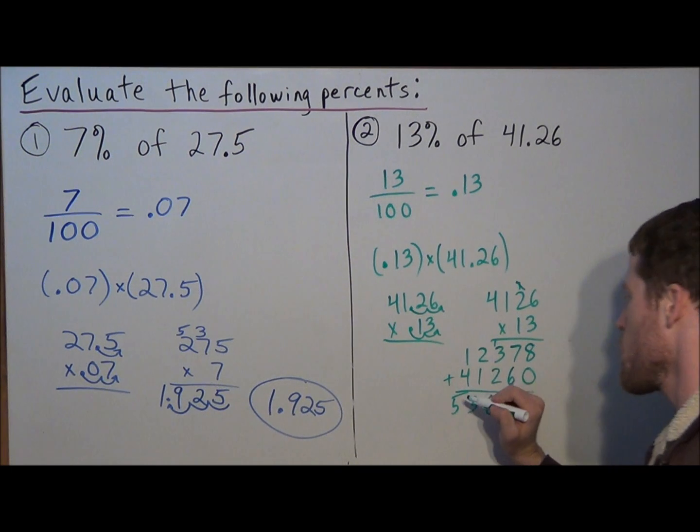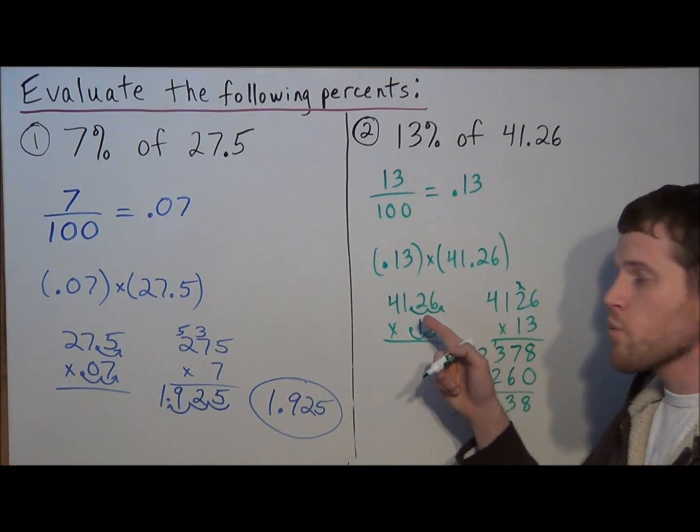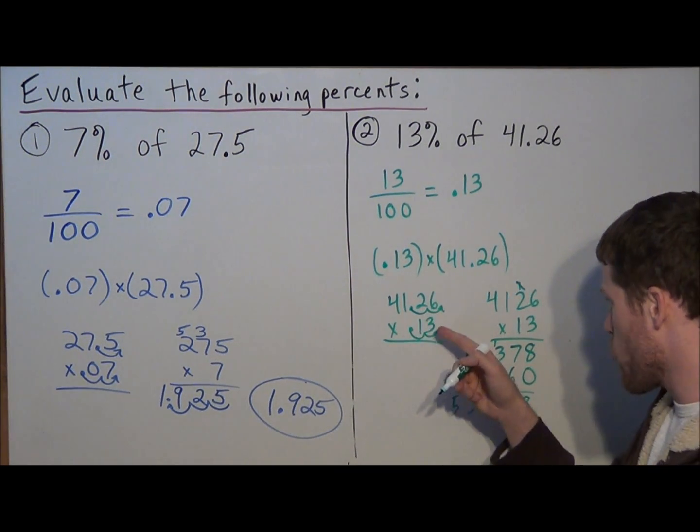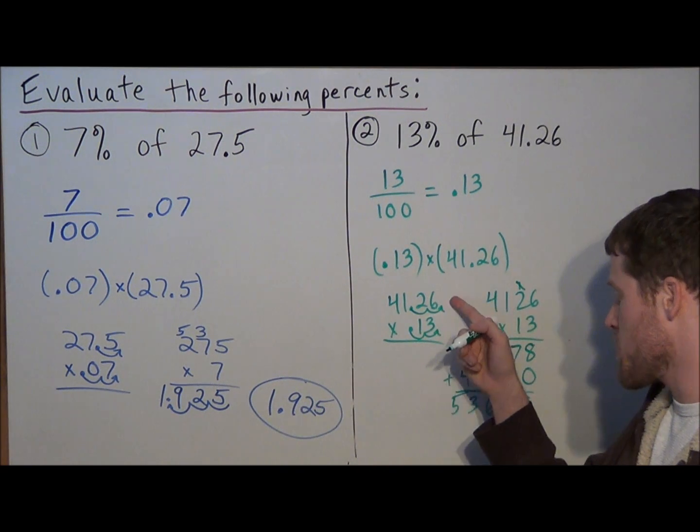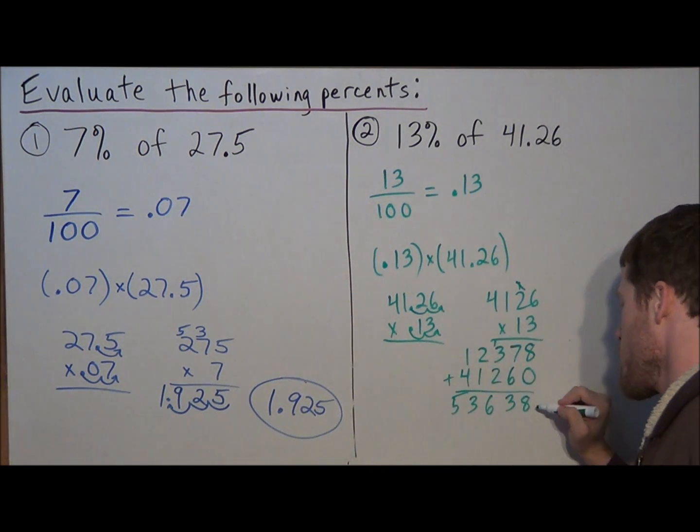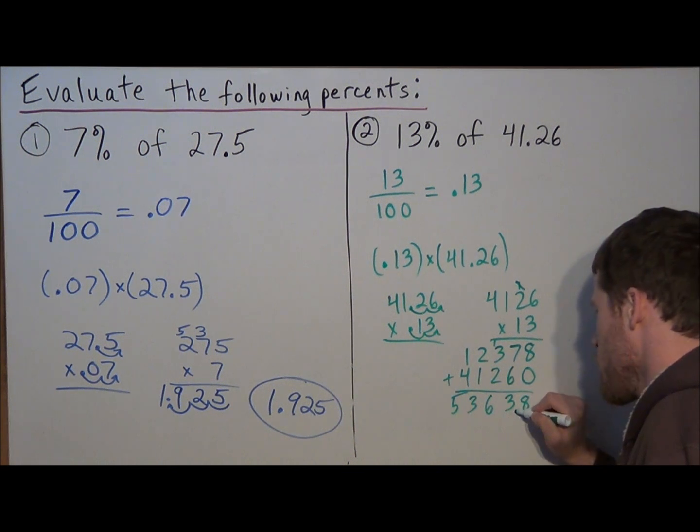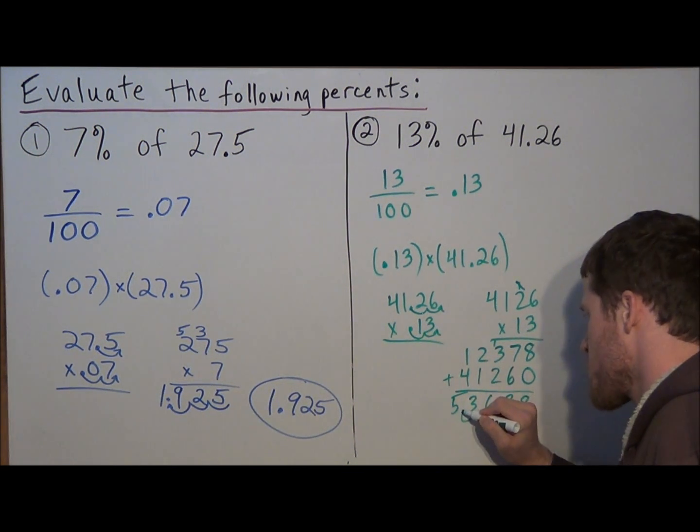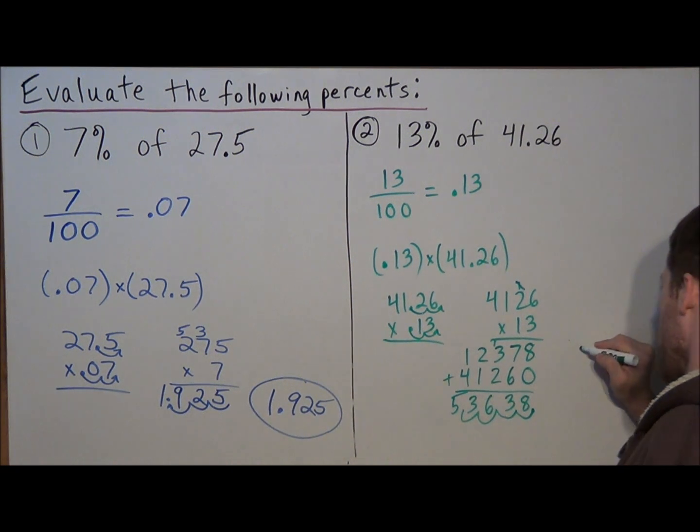But remember what we said before: when we multiplied, we moved the decimal a total of 4 spaces to the right. We did 2 for the top, 2 for the bottom. So now we need to take this decimal and go 4 spaces back to the left, so we're going 1, 2, 3, 4. So the decimal is going to go right here. So our final answer to the second example is 5.3638.